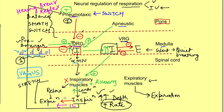We have now developed our flowchart for neural control of respiration. When the inspiratory neurons of the dorsal respiratory group are inhibited, the inspiratory neurons of the ventral respiratory group also stop firing, removing their inhibition on the expiratory neurons. The expiratory neurons then become active and stimulate the alpha motor neurons supplying the expiratory muscles, causing deep expiration.